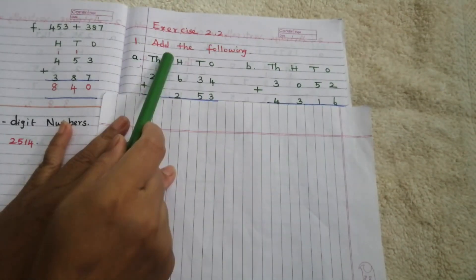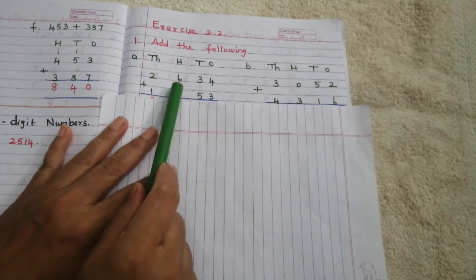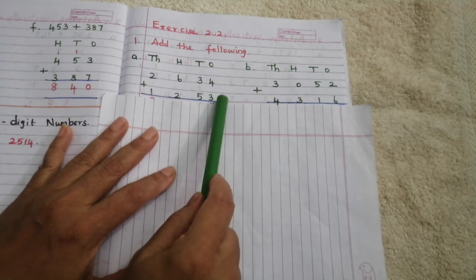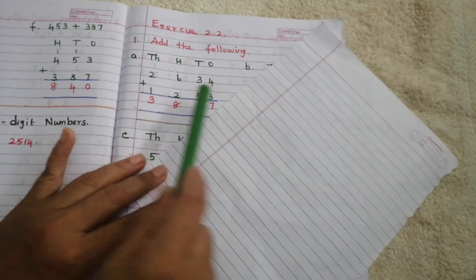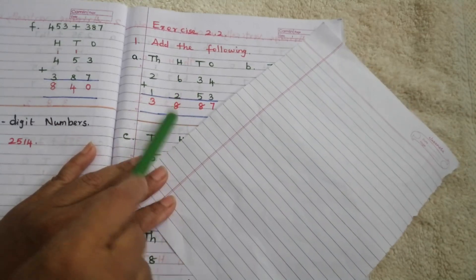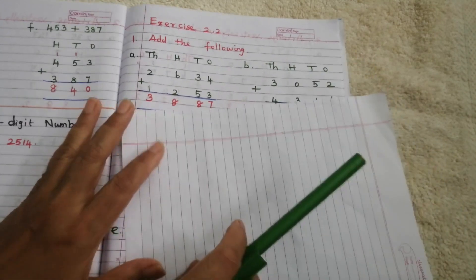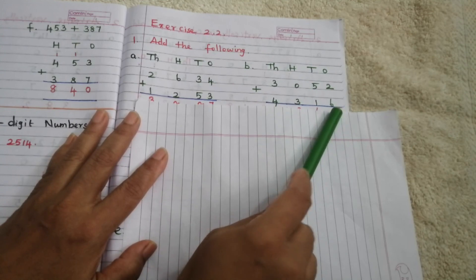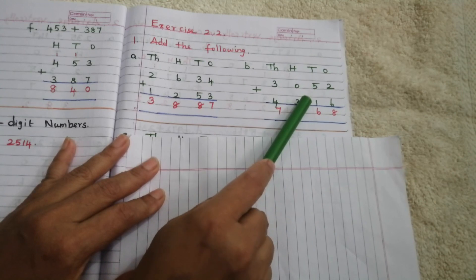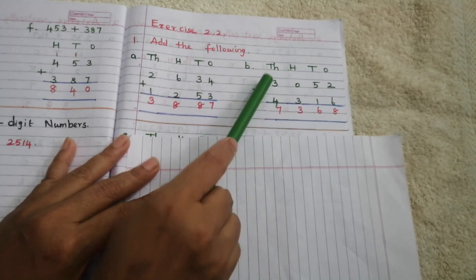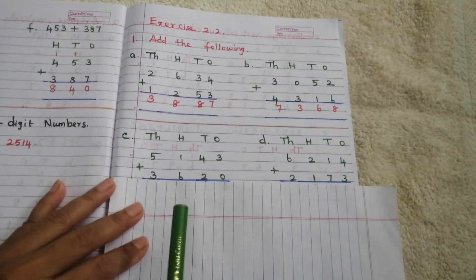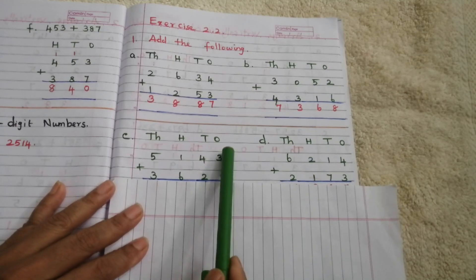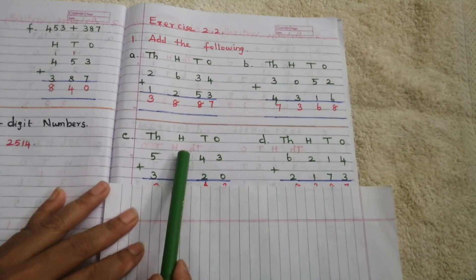Exercise 2.2, first problem. Add the following: Problem A — 2,634 plus 1,253. Adding 4 and 3 we get 7, 5 plus 3 is 8, 6 plus 2 is 8, 2 plus 1 is 3. Problem B — 3,052 plus 4,316: 6 plus 2 is 8, 5 plus 1 is 6, 0 plus 3 is 3, 4 plus 3 is 7. Problem C — 5,143 plus 3,620: 0 plus 3 is 3, 4 plus 2 is 6, 6 plus 1 is 7, 5 plus 3 is 8.